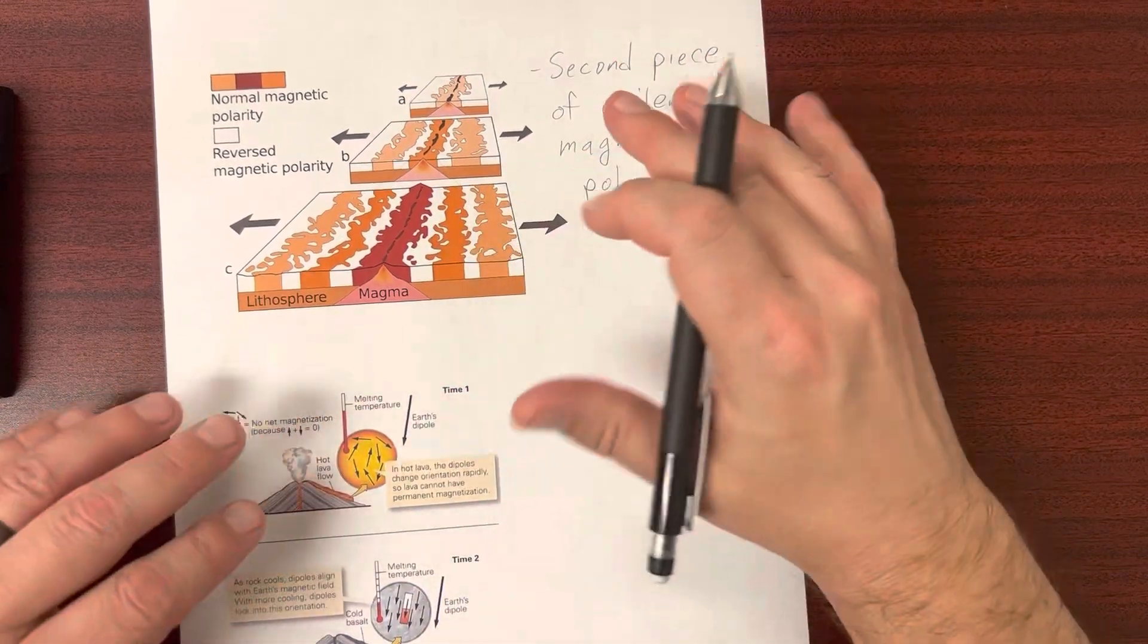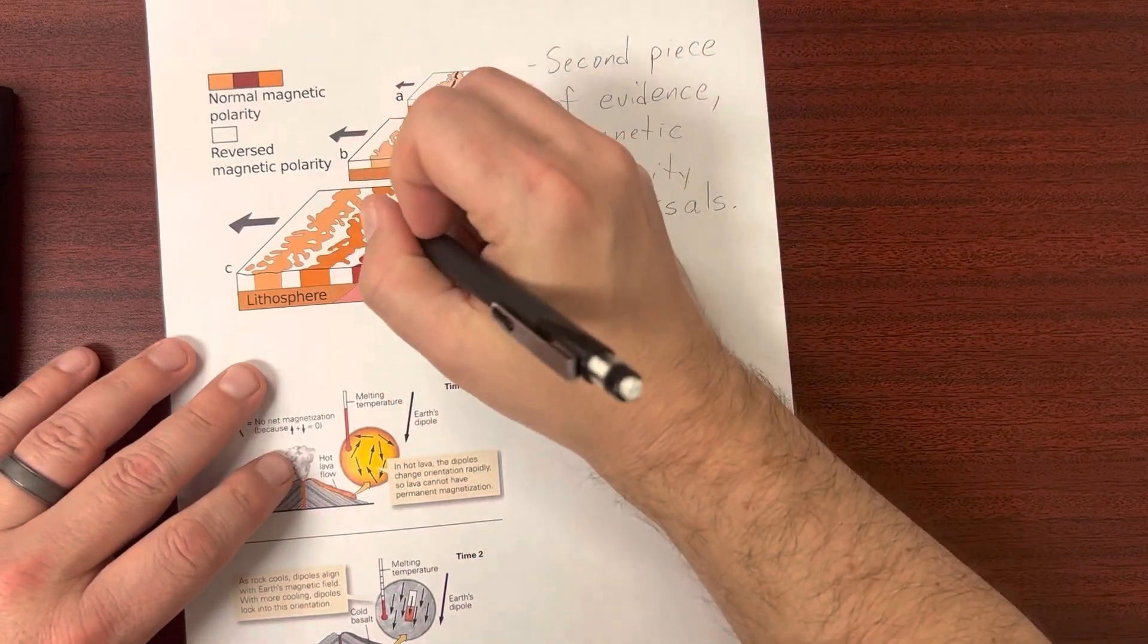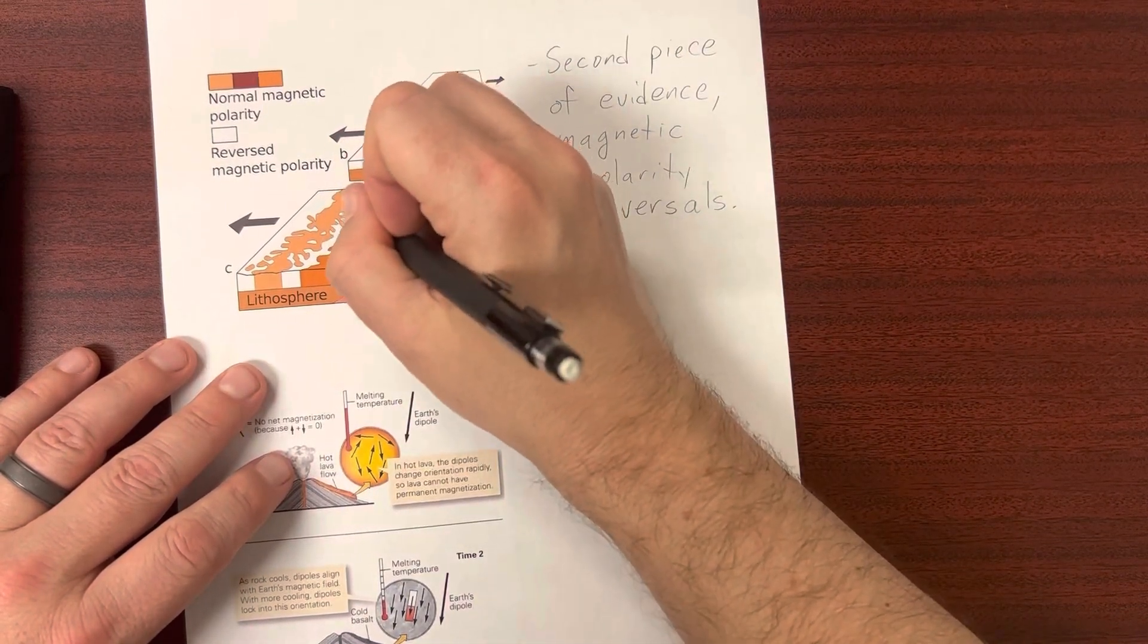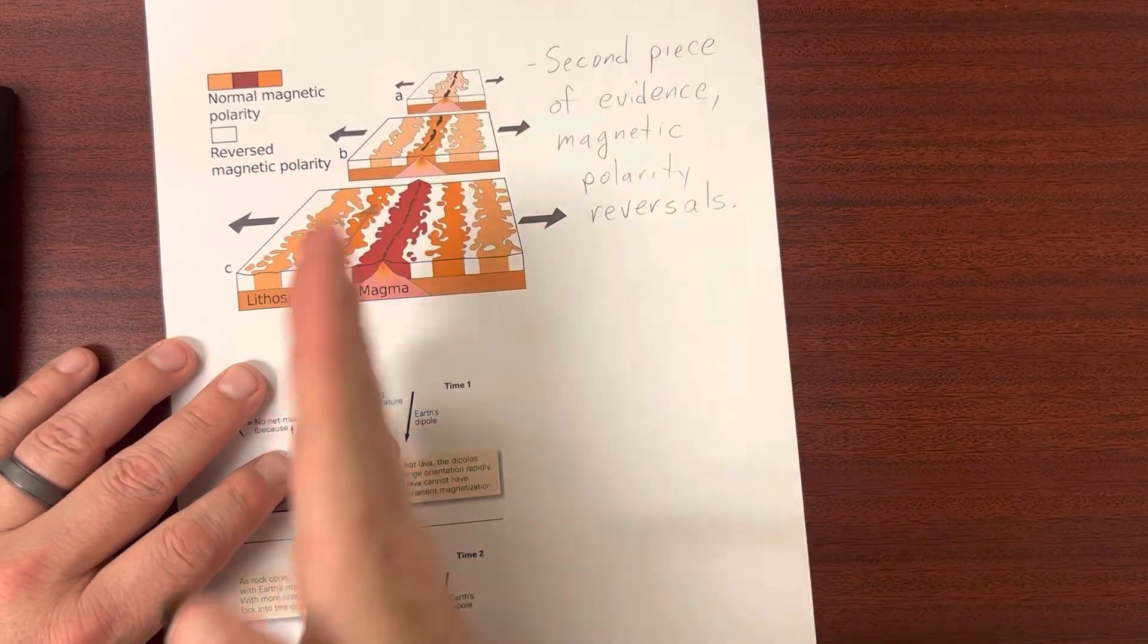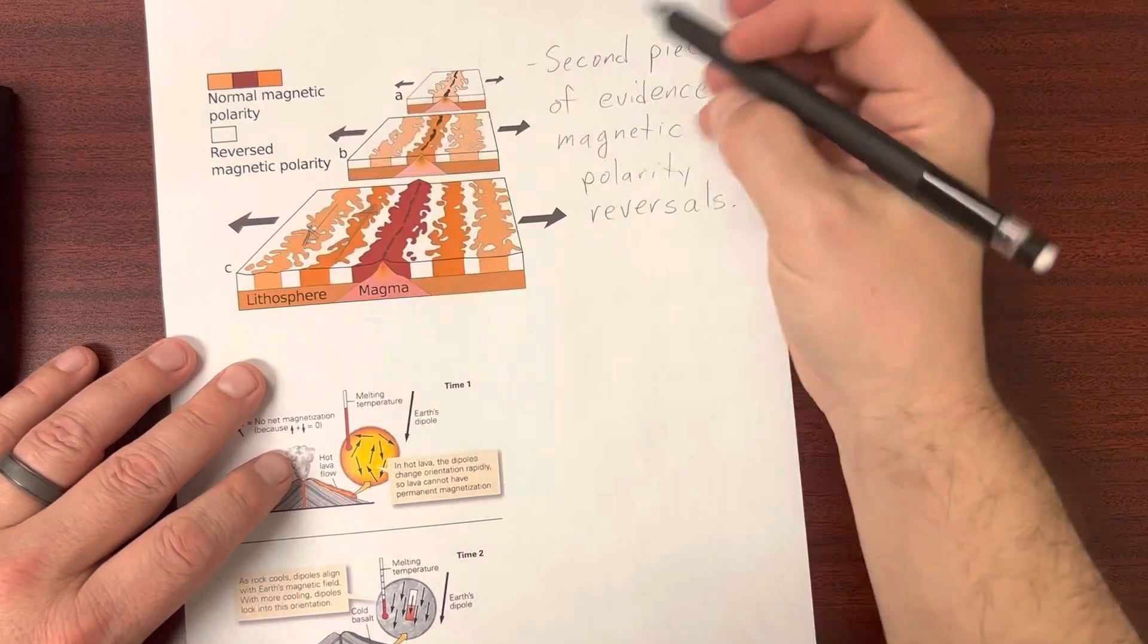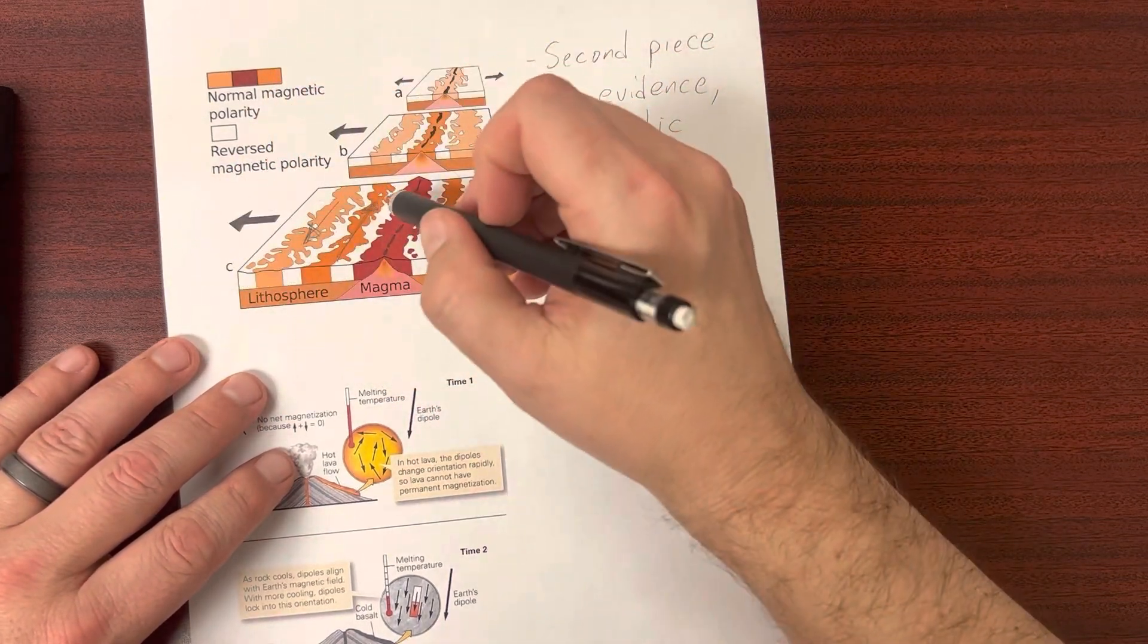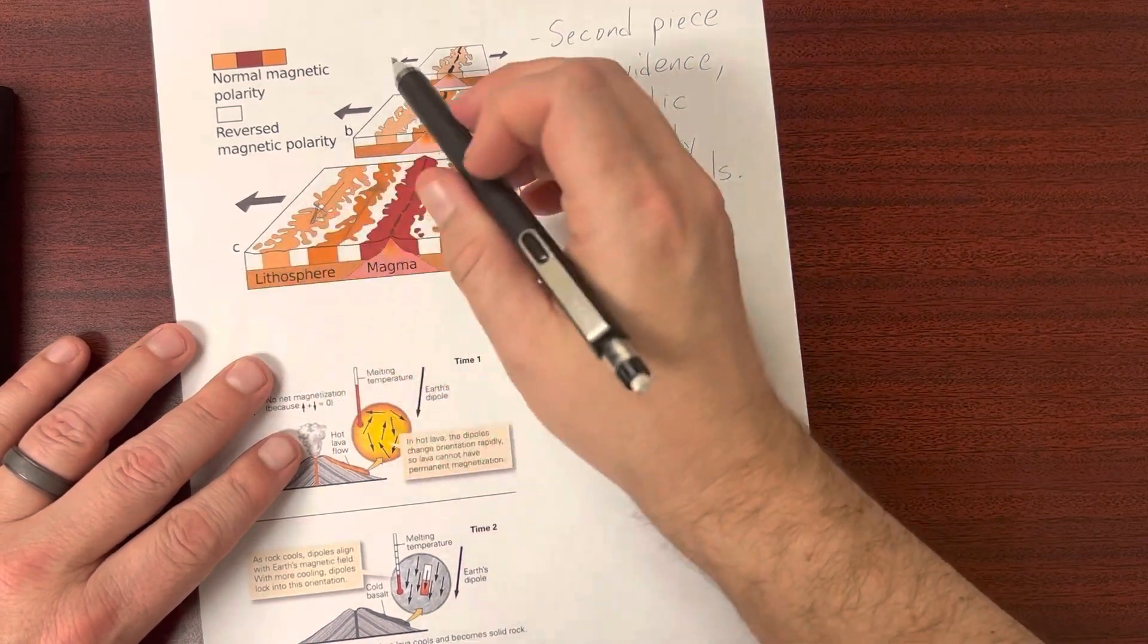And when that happens, you get these bands of these minerals pointing in one direction or the other. For instance, this band here, this dark orange band, might be pointing north. All of them might be pointing north, where this lighter band here would be, all the minerals there would be pointing the opposite direction. And the bands just go all the way across the ocean floor, alternating north-south, north-south, north-south.